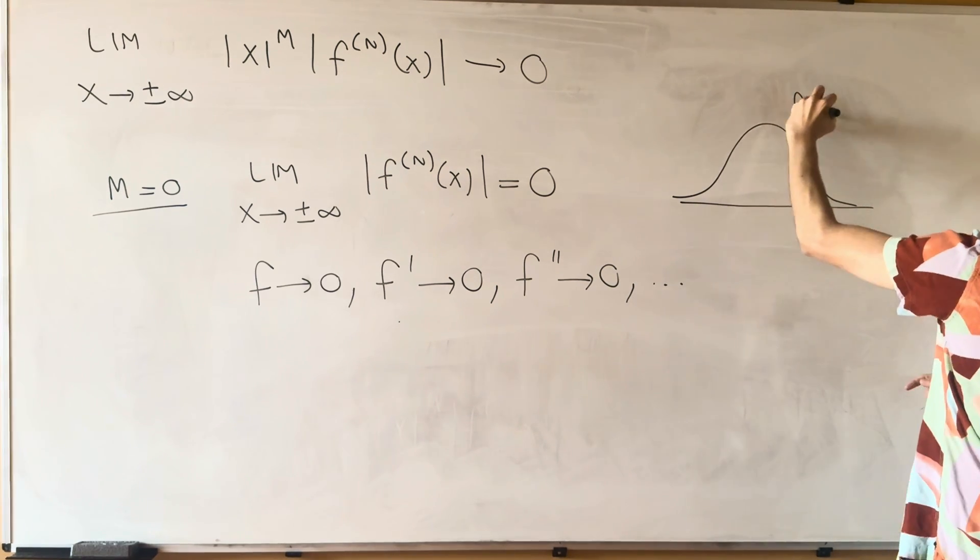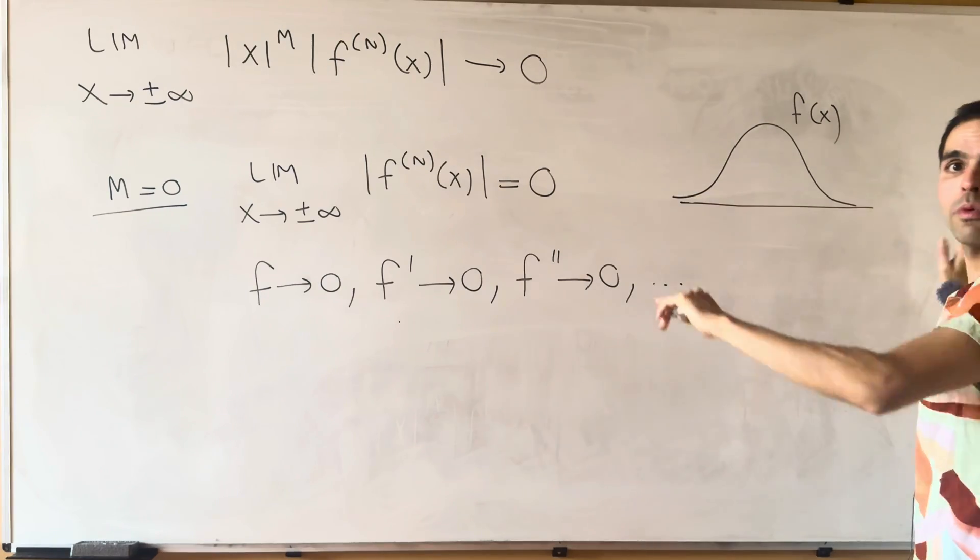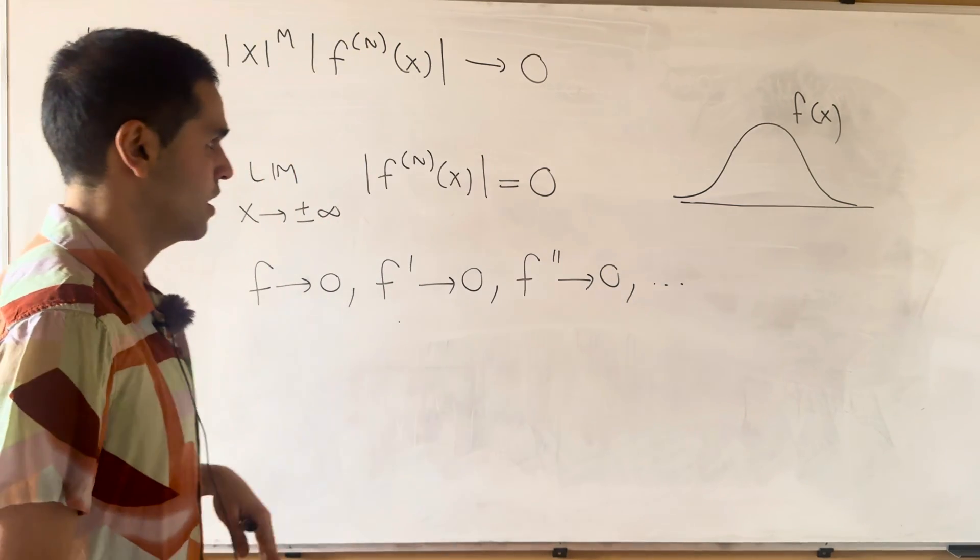Kind of like that. I think this is f of x, f goes to zero, the slope goes to zero, the second derivative goes to zero, et cetera.